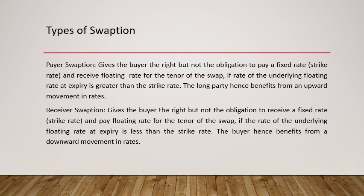There are two types of swaptions — payer swaption and receiver swaption. In a payer swaption, you pay the fixed rate and receive the floating rate. For this to be favorable you want to pay a lower fixed rate and receive a higher floating rate. In a receiver swaption, you receive the fixed rate and pay the floating rate, so you want the fixed rate to be higher and the floating rate to be lower. To remember: payer means you pay the fixed rate; receiver means you receive the fixed rate.